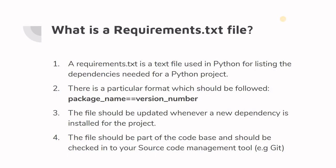So what is a requirements.txt file? Requirements.txt is a text file used in Python for listing the dependencies needed for a Python project. In simple words, it's just a simple text file that you could put in your project folder and it holds the list of all the dependencies that you have for your particular project.